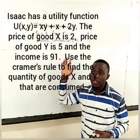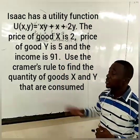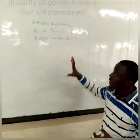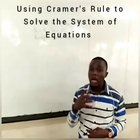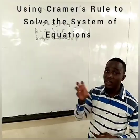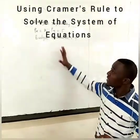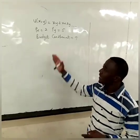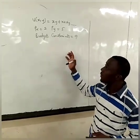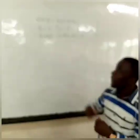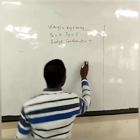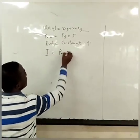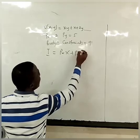The requirement for this particular question is for us to use Cramer's Rule to solve this problem. So today what I want to focus on is how to use Cramer's Rule to solve a system of equations. The first thing we're supposed to do is to get some equations that we can cast into matrix form. So I'm going to first set the budget constraint, which is given by I equal to Px·x plus Py·y.